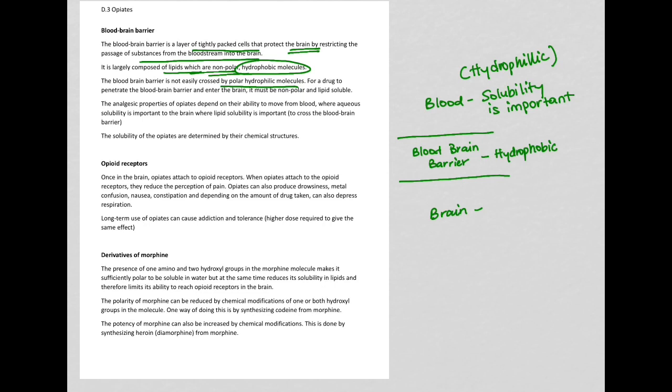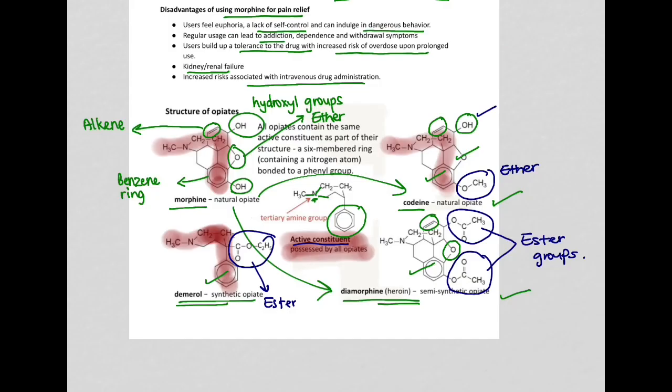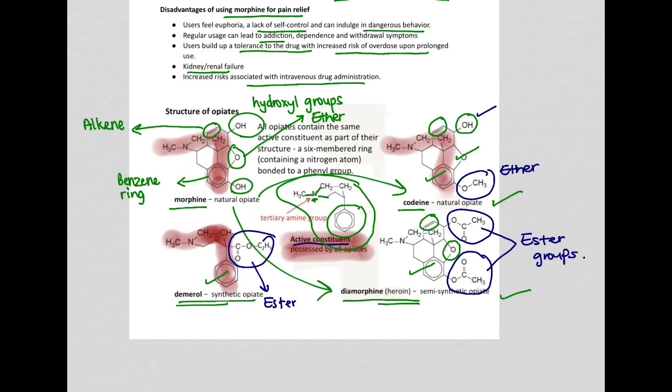Once in the brain, the opiates will attach to opioid receptors. When they attach to these receptors, they reduce the perception of pain. These receptors are those that will click in this active constituent. This part of the molecule will click in the opioid receptors in the brain.